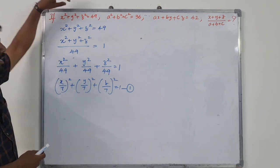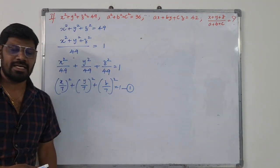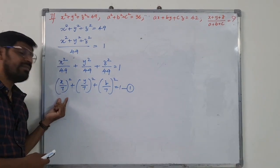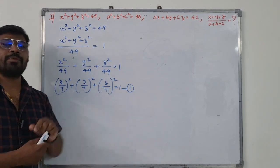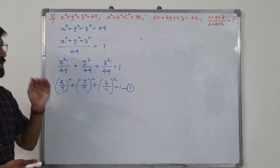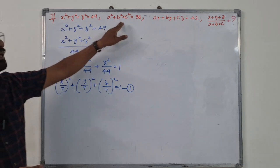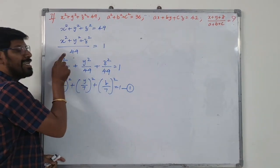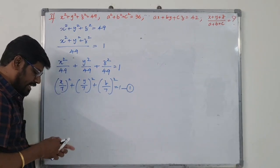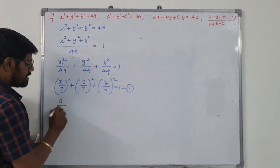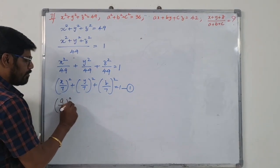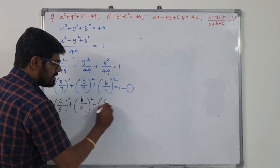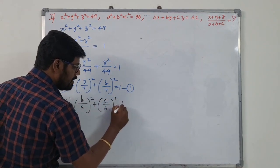So the first equation normalized equals 1. Similarly, the second equation: a squared plus b squared plus c squared equals 36. Dividing by 36 and separating: (a by 6) whole squared plus (b by 6) whole squared plus (c by 6) whole squared equals 1.